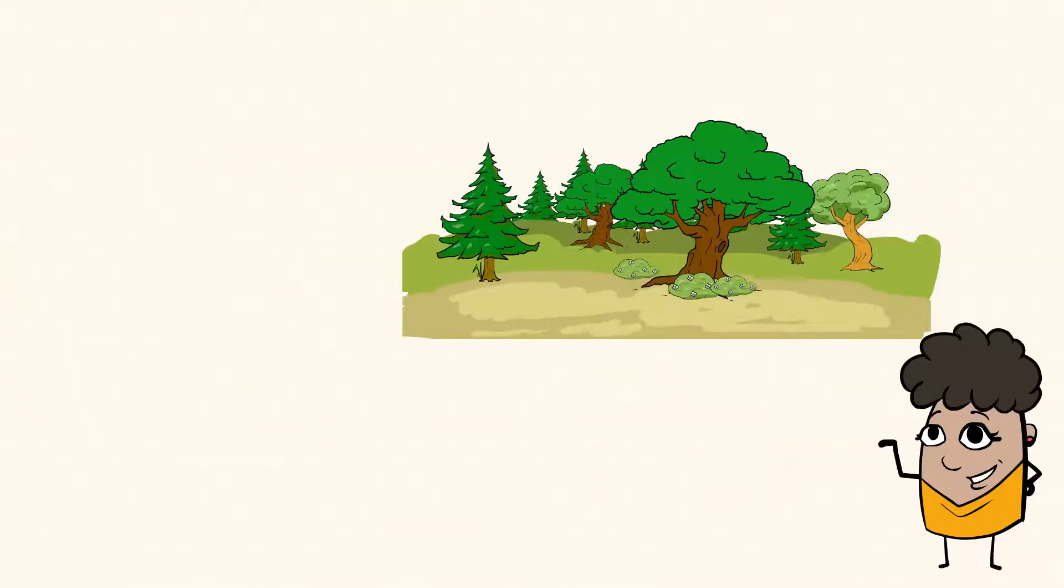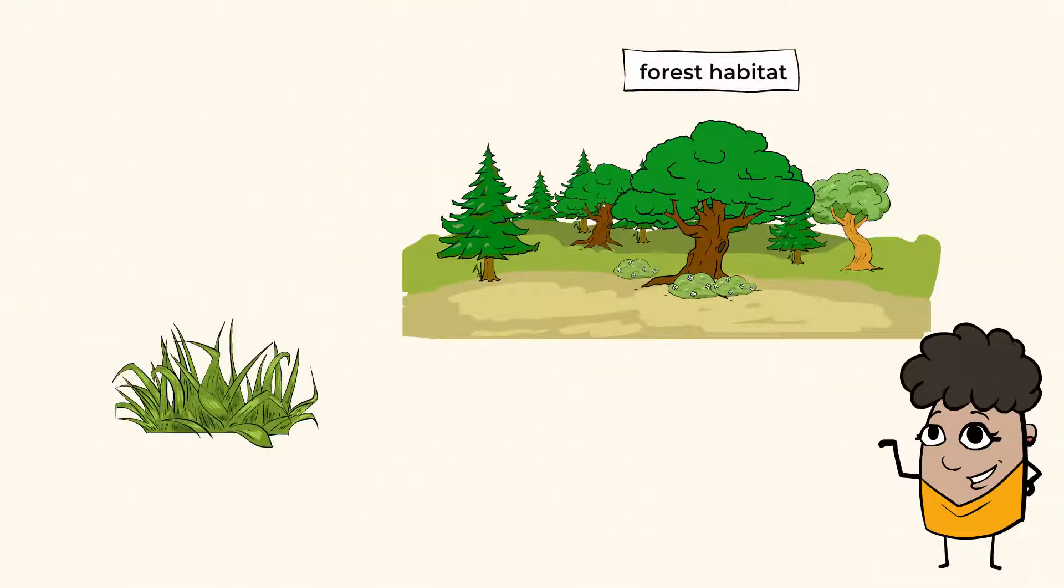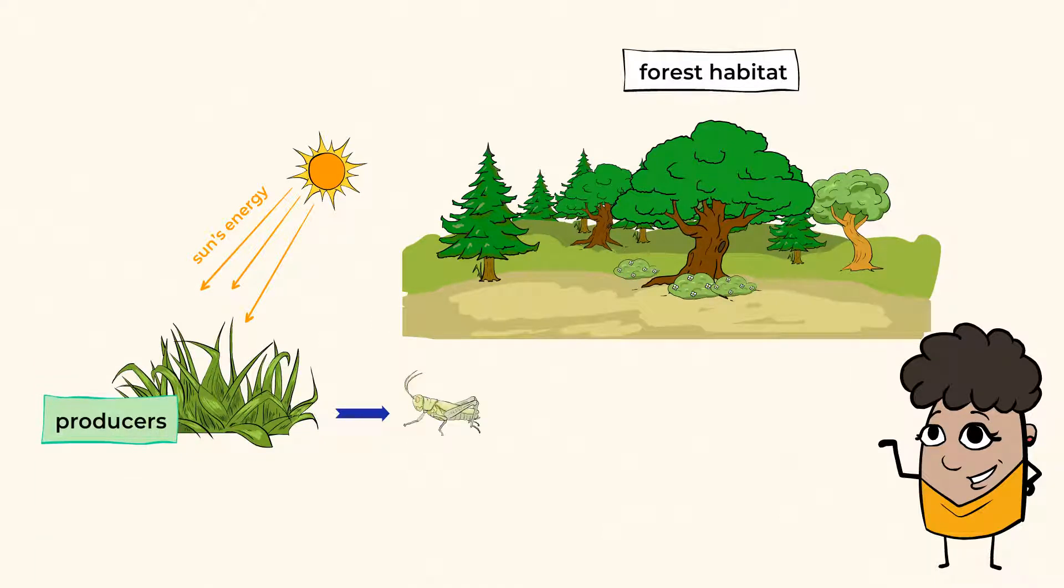Let's take a look at this forest habitat. The grass gets its energy from the sunlight and turns it into food. It makes or produces its own food. And guess what? This is why plants are called producers. Then the grass gets eaten by a grasshopper.